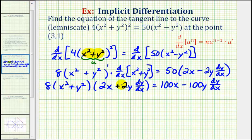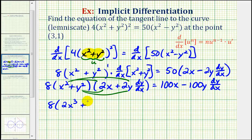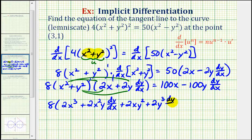Let's clear the parentheses on the left side. We'll have four products: 8 times x squared times 2x gives 16x cubed; plus 2x squared y dy/dx; plus 2xy squared; plus 2y cubed dy/dx. On the right side we distribute 50 to get 100x minus 100y dy/dx.